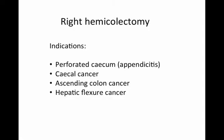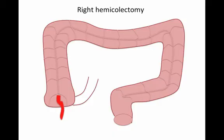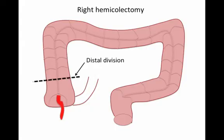Starting with the right hemicolectomy. Indications include benign causes, such as a perforated cecum secondary to nasty appendicitis, or malignant causes such as cecal, ascending colon, hepatic flexure, and sometimes transverse colonic cancers. In a non-oncological resection — for example where the cecum is perforated secondary to an inflamed appendix — we talk about our proximal division at the terminal ileum and distal division in the colon. As this is non-oncological, we don't have to worry about resection margins related to lymphatic drainage, and therefore we can make our divisions relatively close, leaving as much bowel as possible.